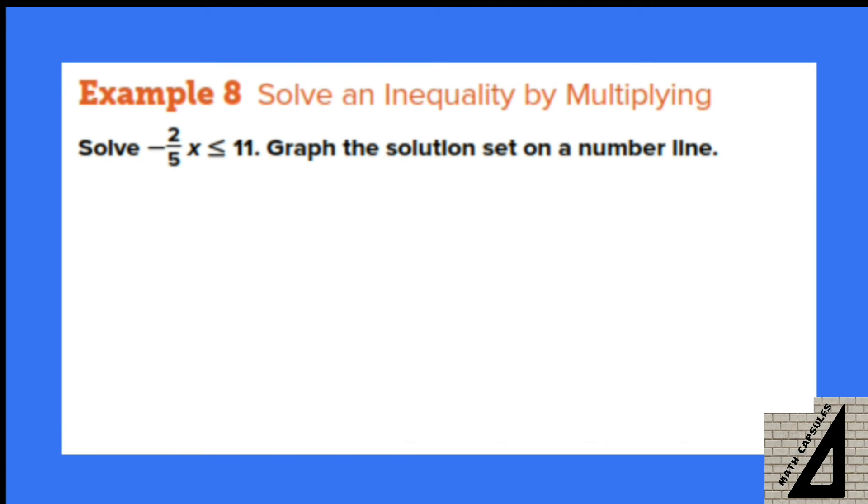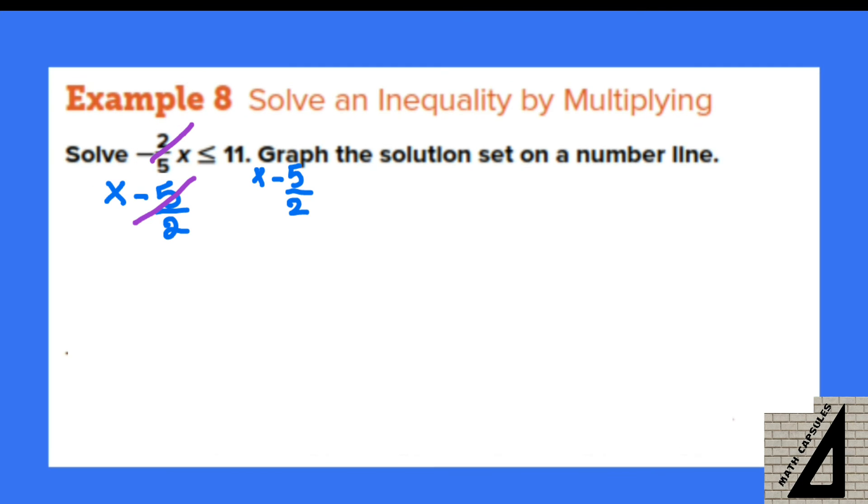Now solve negative 2 over 5x less than or equal to 11 and graph the solution set on the number line. First, you have negative 2 over 5 multiplied by x. So to get rid of it, I'm going to multiply both sides of the inequality by the reciprocal of negative 2 over 5, which is negative 5 over 2.